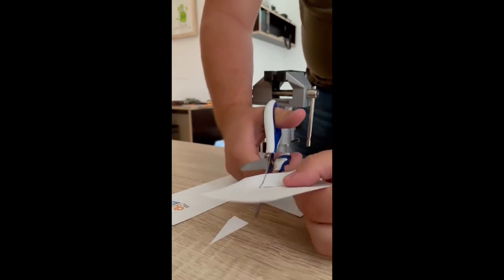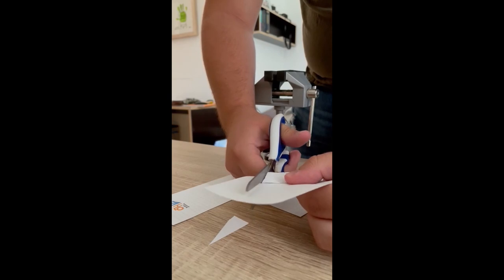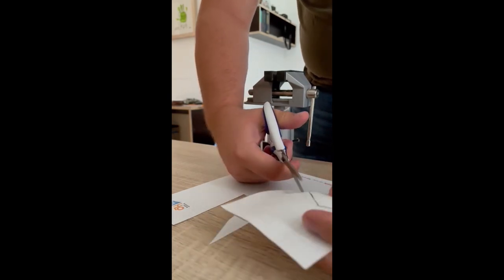Next I cut out the shape of the arrowhead to trace it on the flattened out spoon.